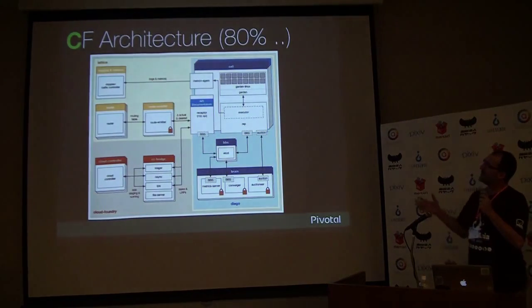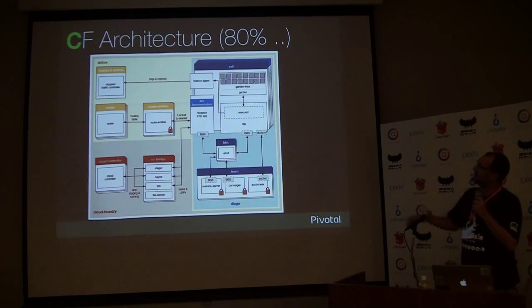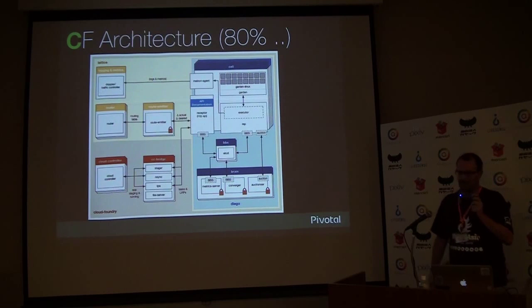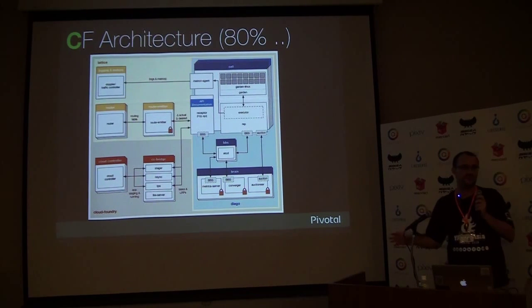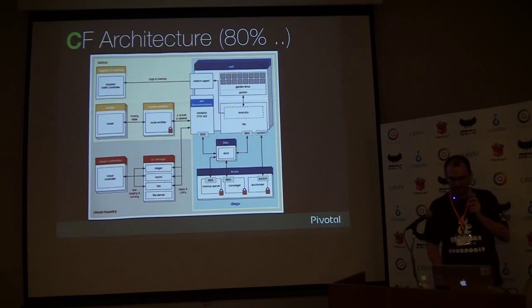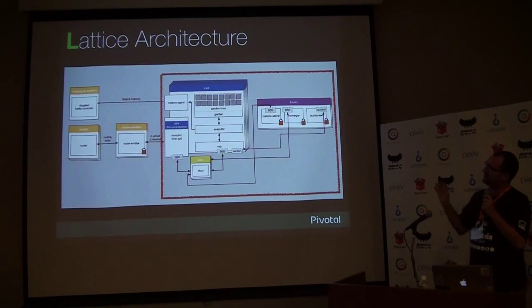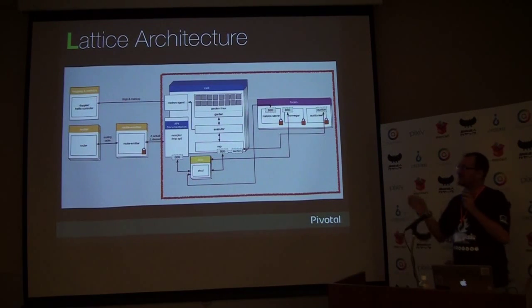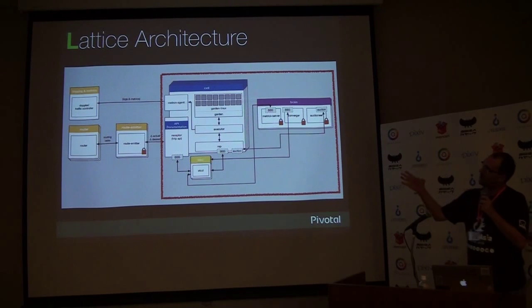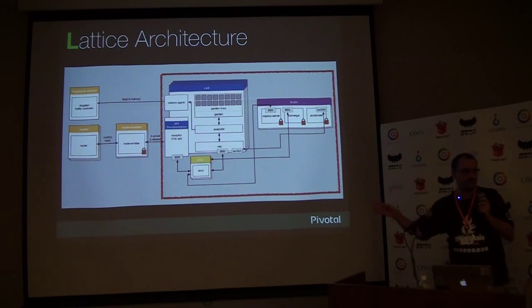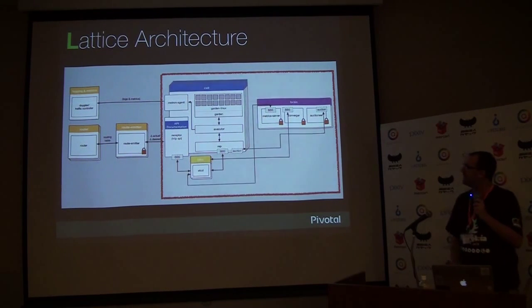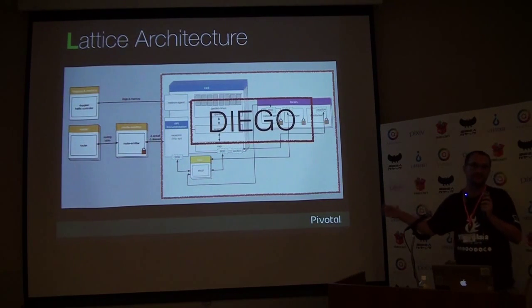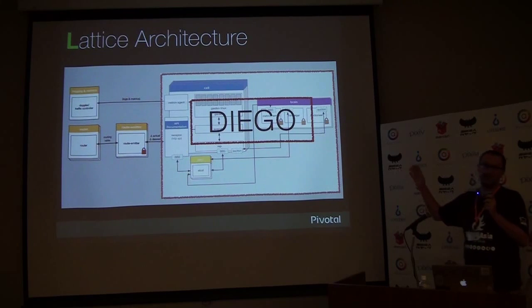This is the CloudFoundry architecture — mostly, like 80%. And as I said, Lattice is a subset of CloudFoundry. So basically, these are the Lattice architectures. As you can see, we keep the router layers, the routing layers, and we keep the schedulers. The name of the scheduler is Diego. I will explain Diego later.